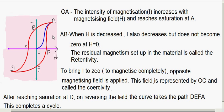The intensity of magnetization of the given ferromagnetic specimen increases with increasing magnetizing field. But after a certain point, though there is an increase in H, I will not increase. That point is called saturation. In this figure, point A is the saturation point — further increase in H will not increase I.